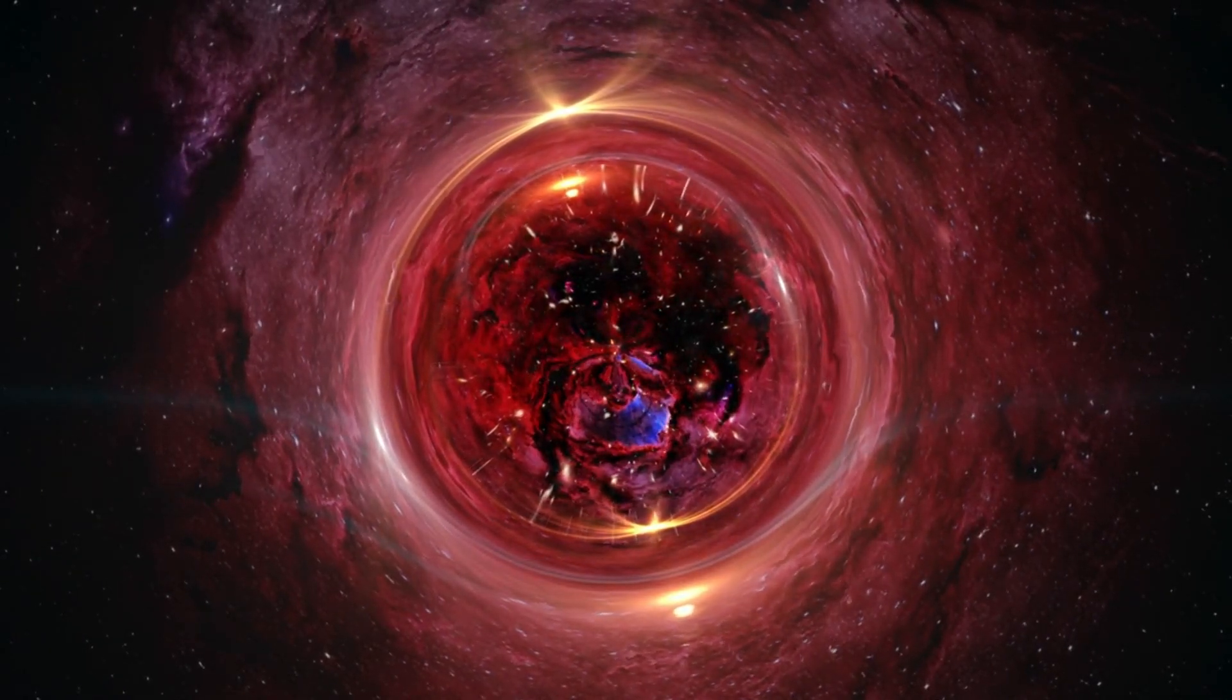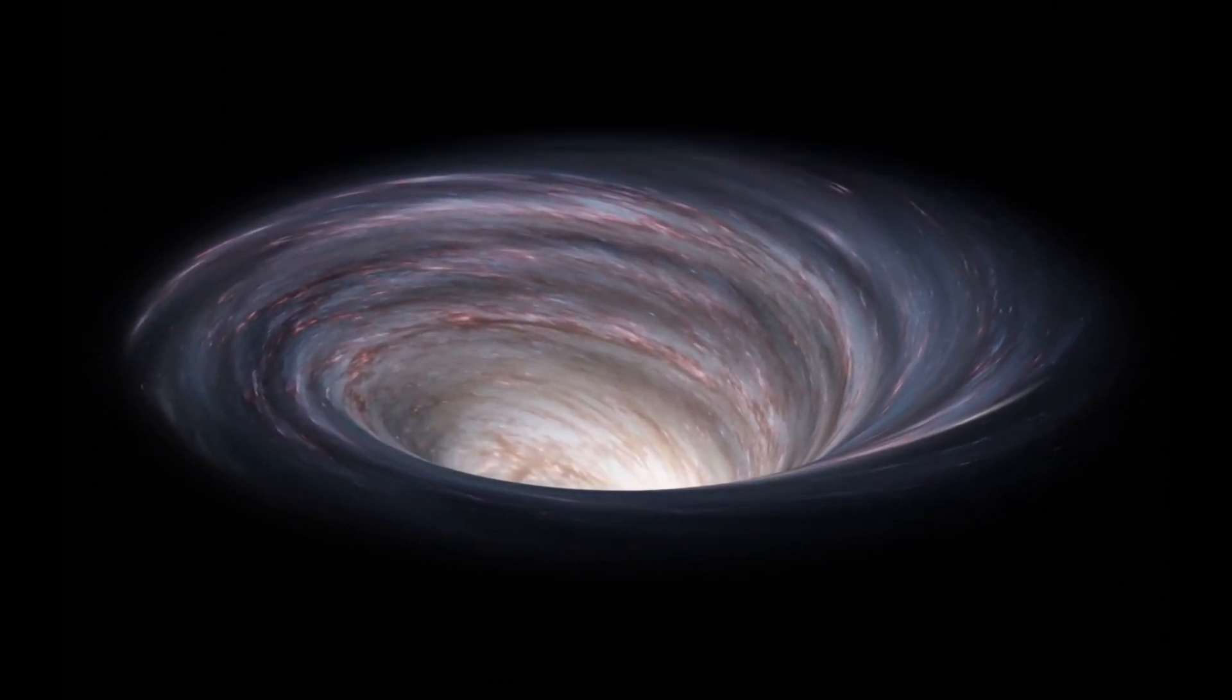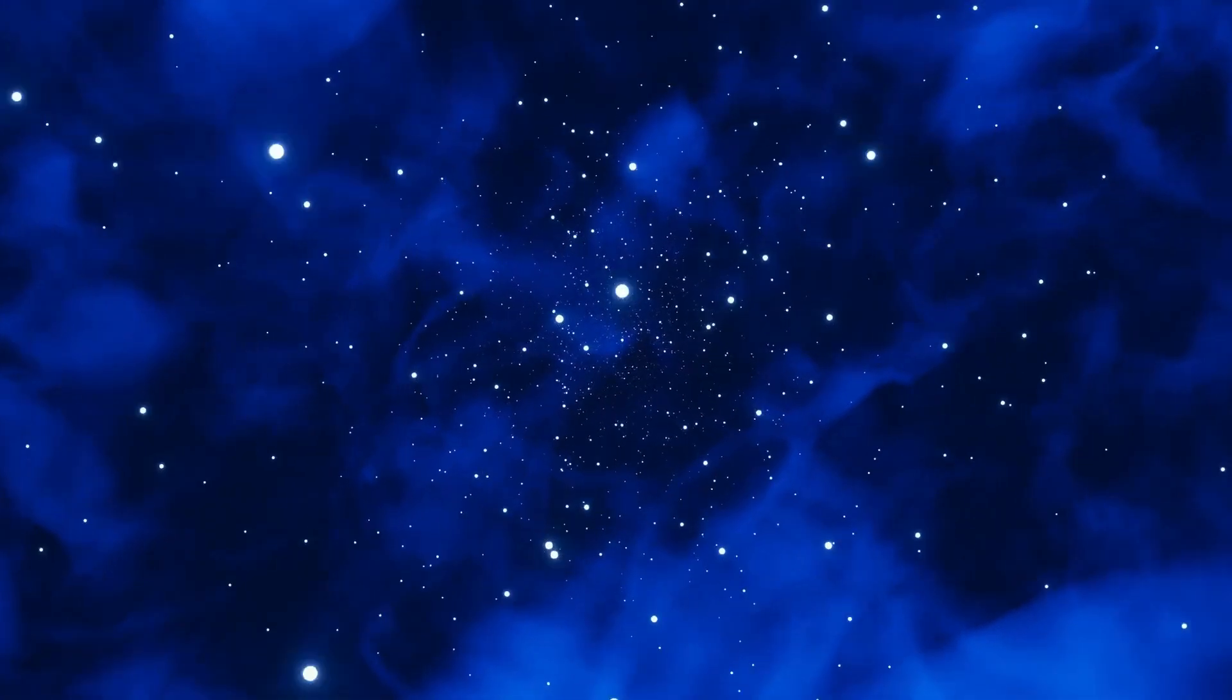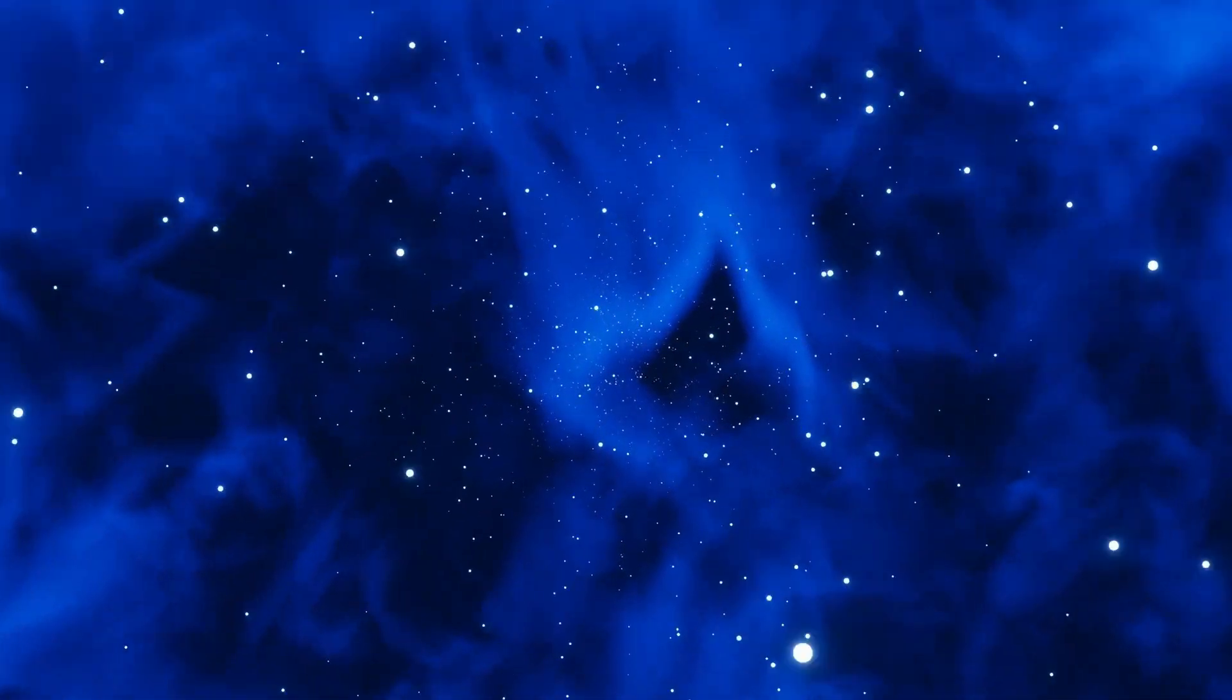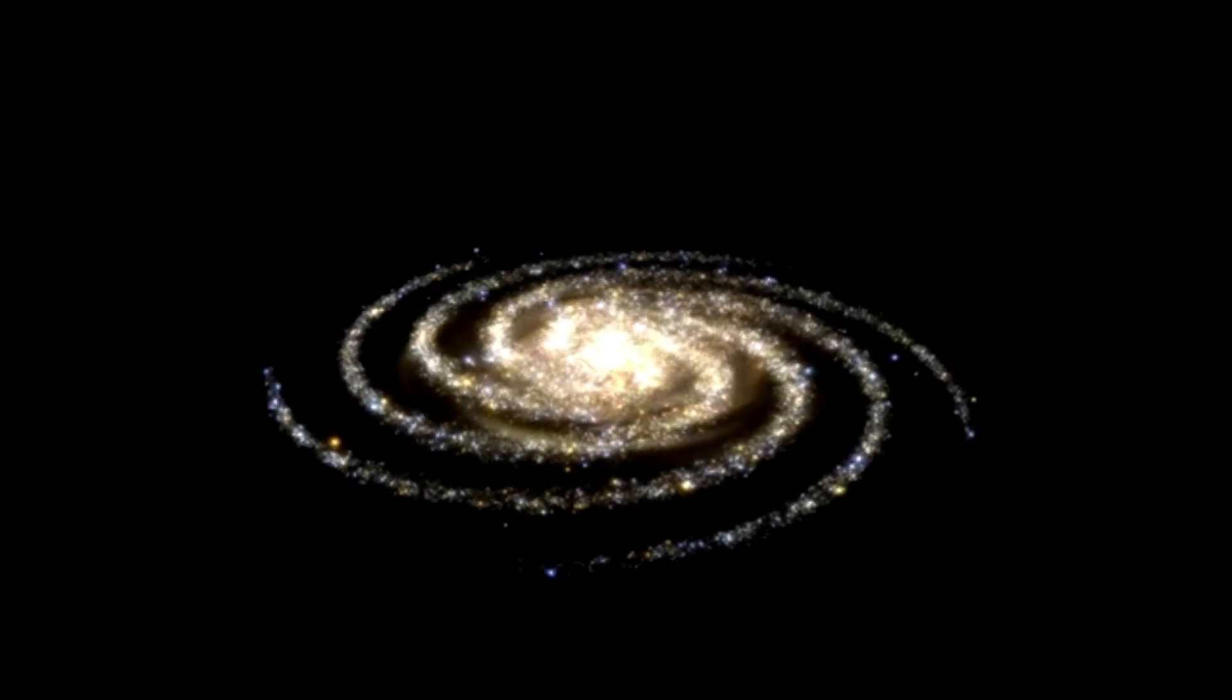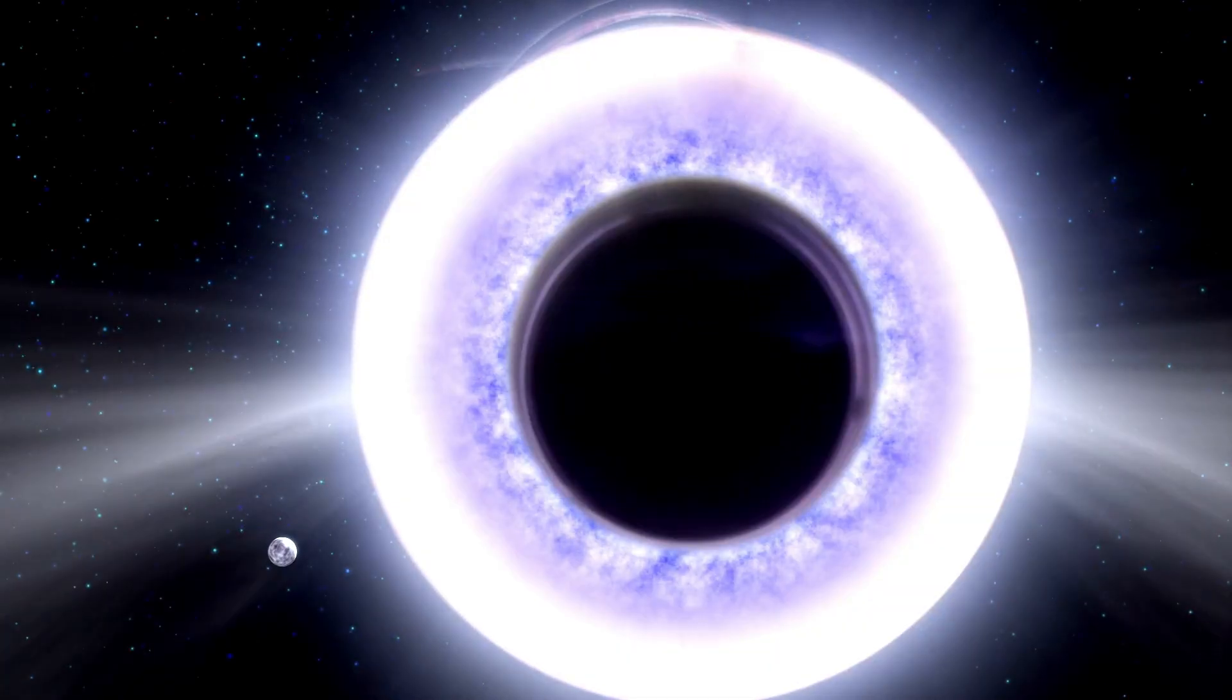Detecting black holes is no easy task since they don't emit any light. However, scientists have found ways to infer their presence by observing their effects on nearby matter. For example, if a black hole passes through a cloud of interstellar matter, it will pull that matter towards it in a process called accretion. Additionally, when a normal star gets too close to a black hole, it can get torn apart, emitting x-rays as it does so.